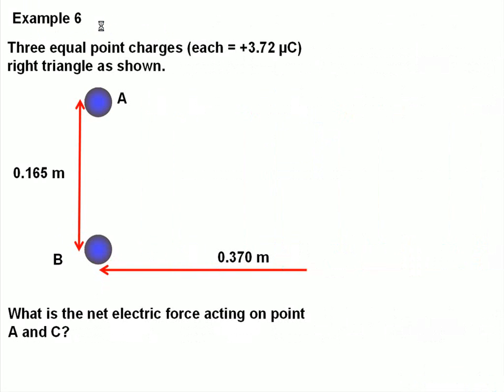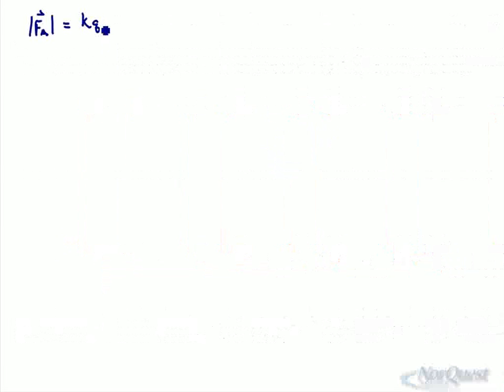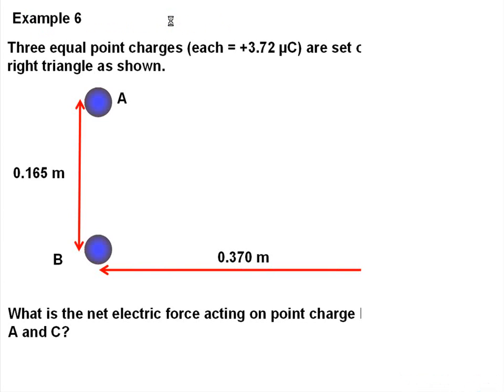So if we found the electric force from A, it's going to equal to K QA QB over RAB squared. And again, I'm going to leave out the units just to make this a little easier to work with. 8.99 times 10 to the 9. The charge on A and B are, again, the same.